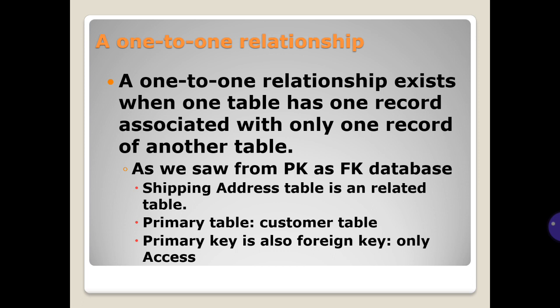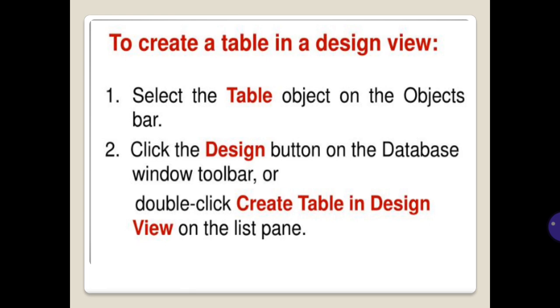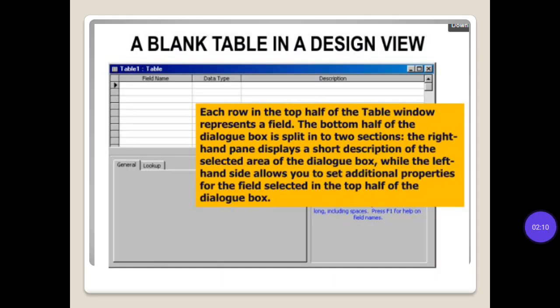To create a table in design view: number one, select the table object on the object bar. Click the design button on the database window toolbar, or double-click create table in design view on the list pane. A blank table in design view. Each row in the top half of the table window represents a field. The bottom half of the dialog box is split into two sections. The right-hand pane displays a short description of the selected area of the dialog box, while the left-hand side allows you to set additional properties for the field selected in the top half of the dialog box.